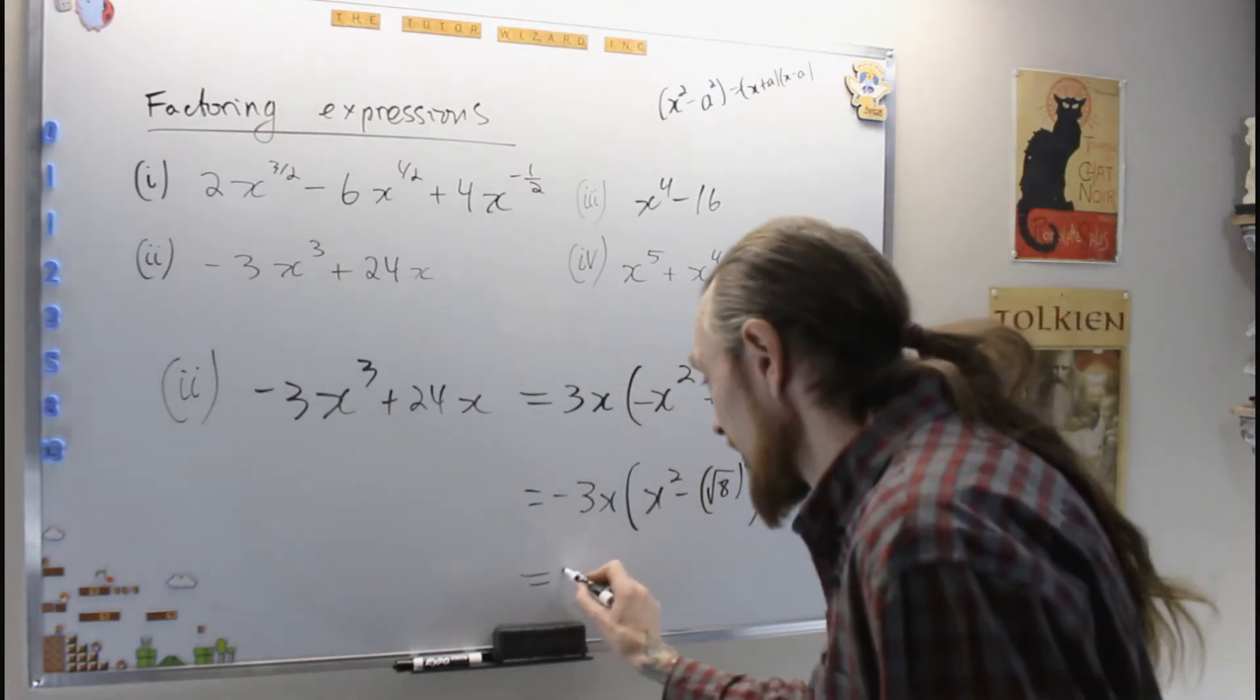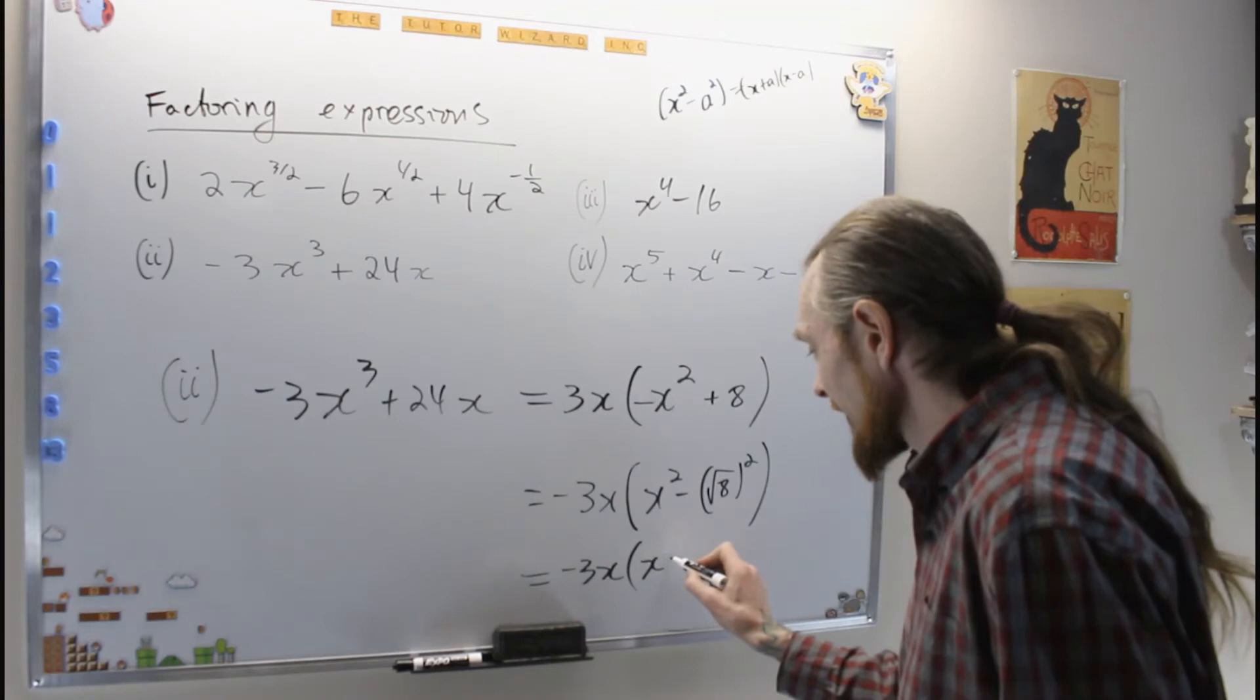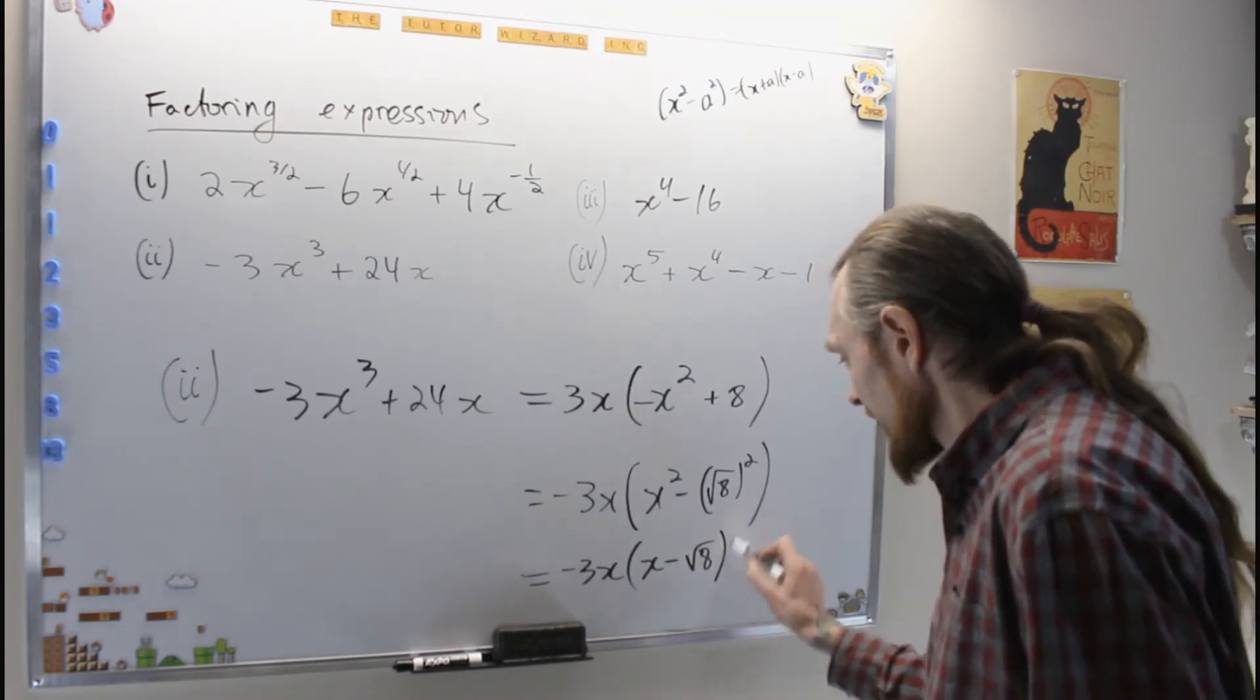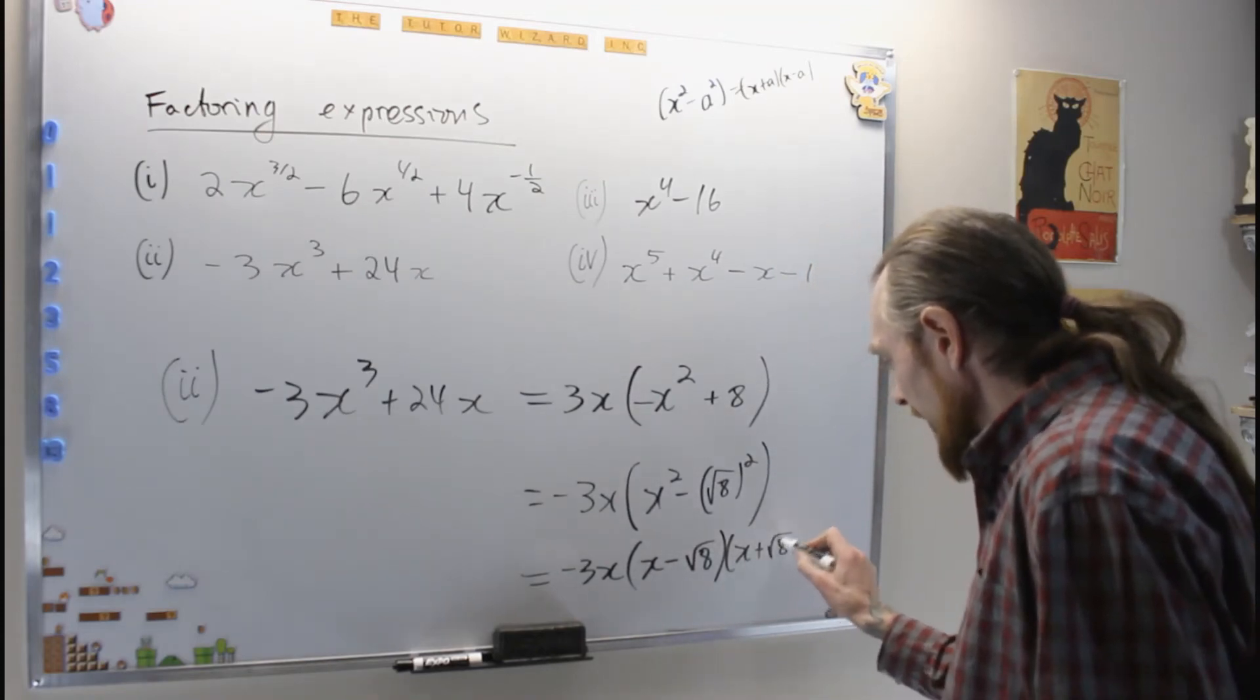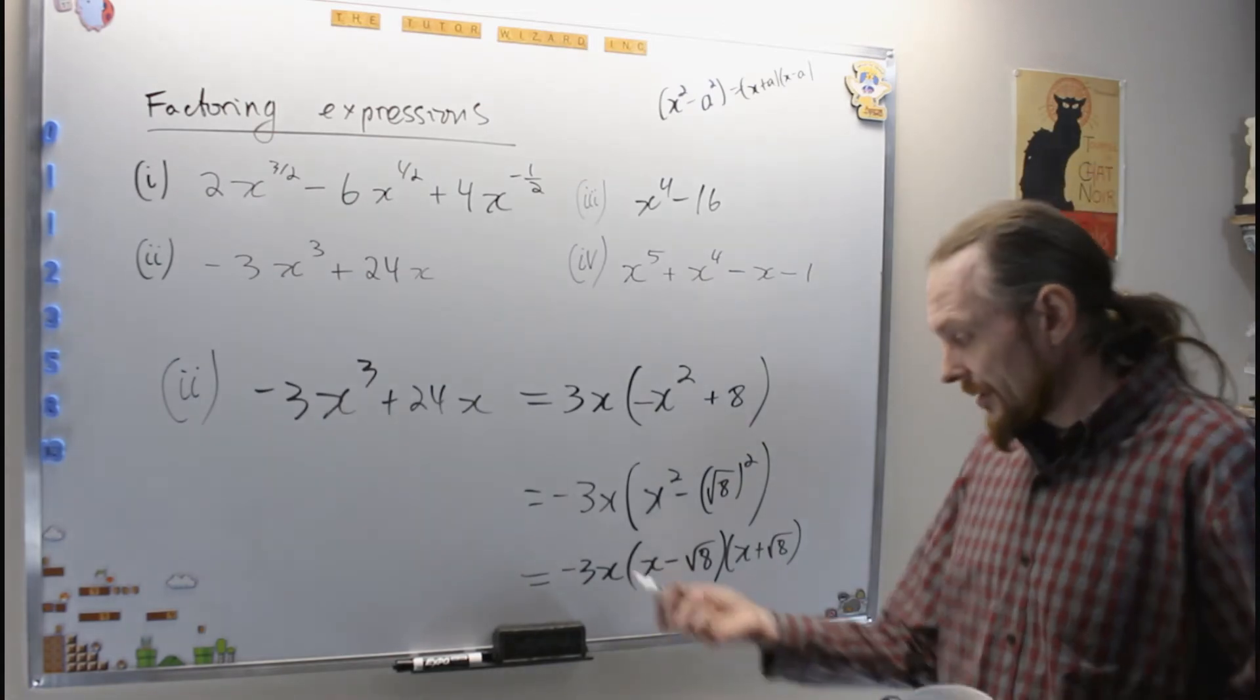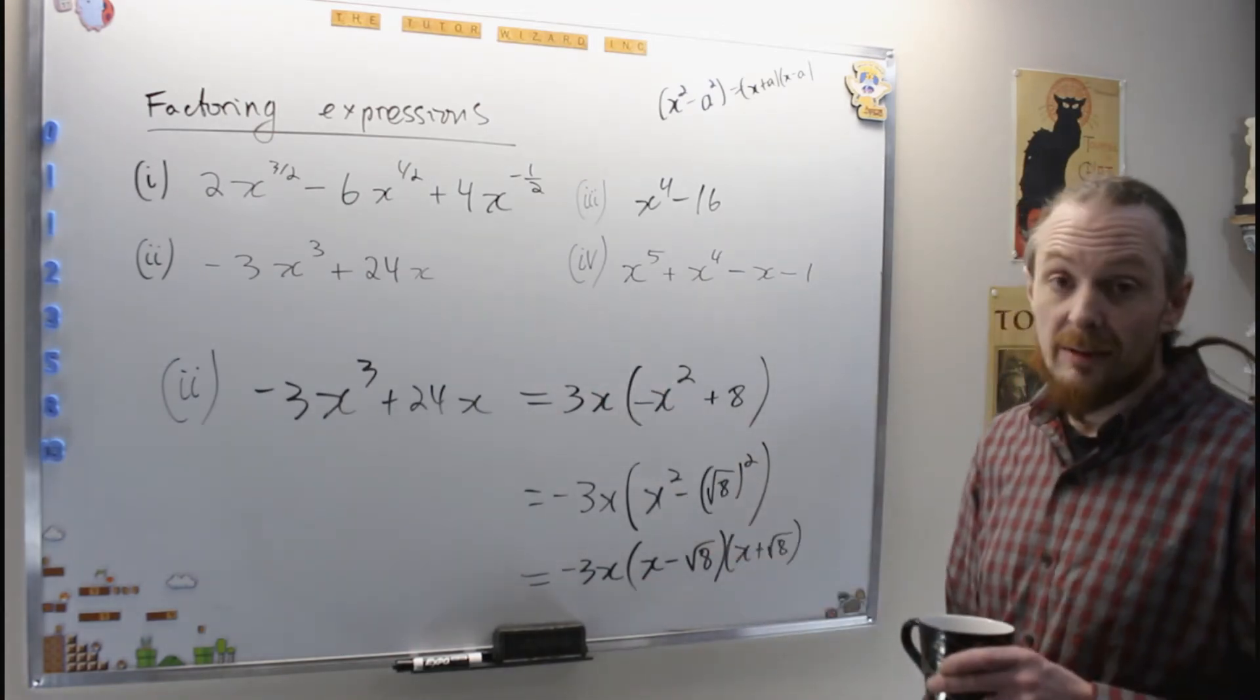So this is now equal to negative 3x, x minus root 8, x plus root 8. And this polynomial now, factored completely.